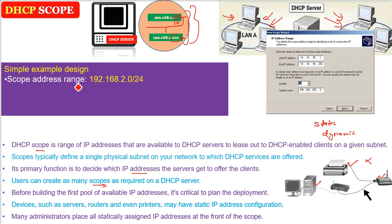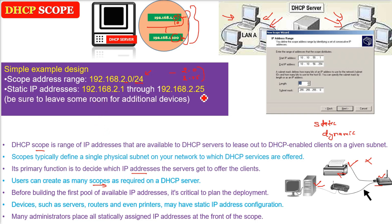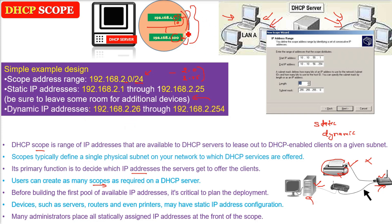Many administrators place all statically assigned IP addresses at the front of the scope. Let me give you an example. For a scope address range of 192.168.2.0/24 — this is 24 bits, the first 24 bits are the network address — the static IP addresses in this example can be given from 2.1 to 2.25. You can give these static IP addresses to routers, servers, printers, and other devices whose IP address you don't want to change.